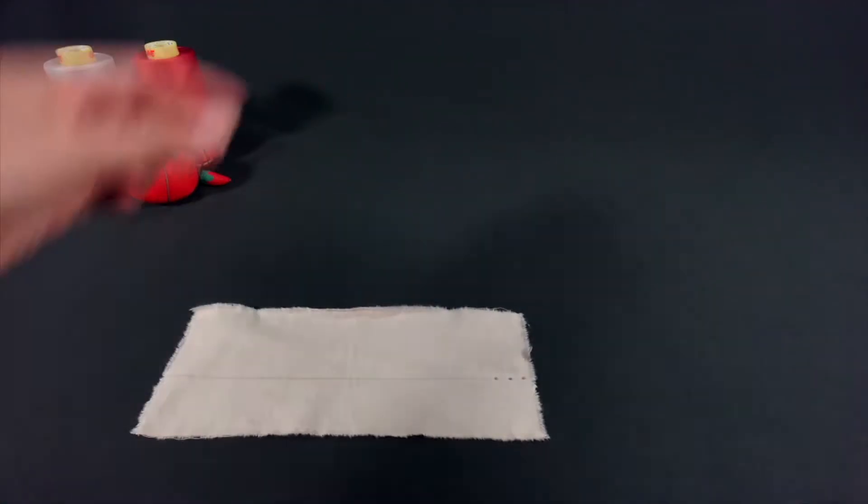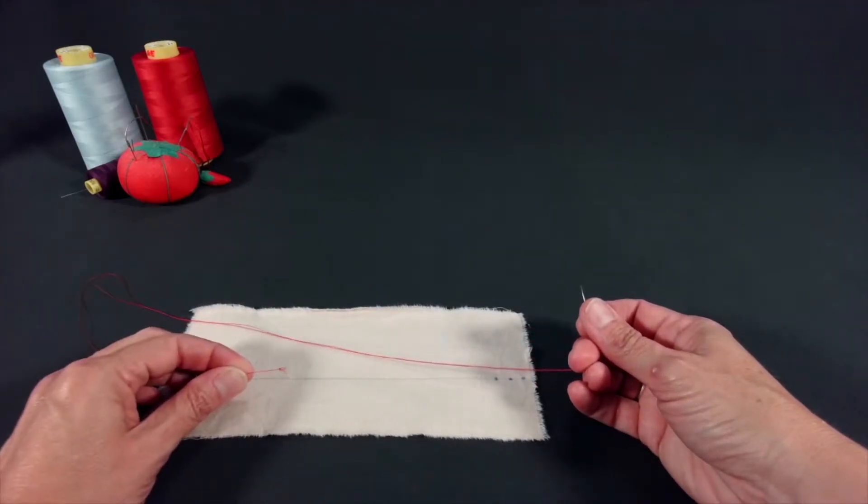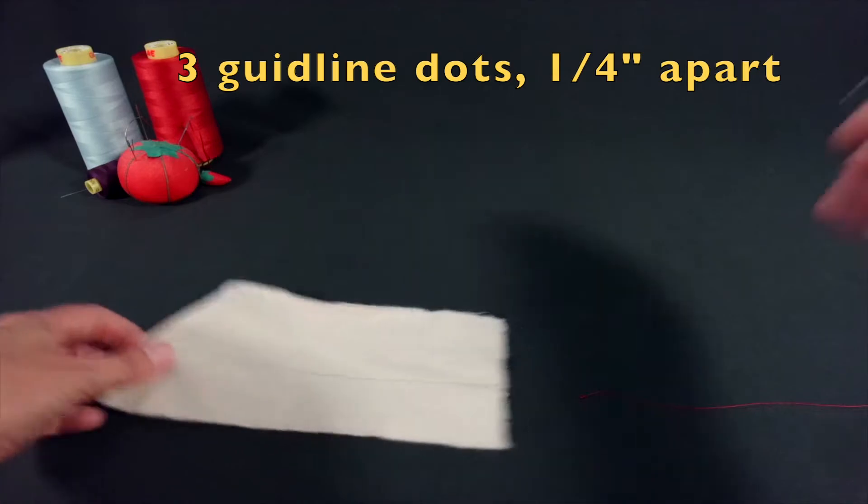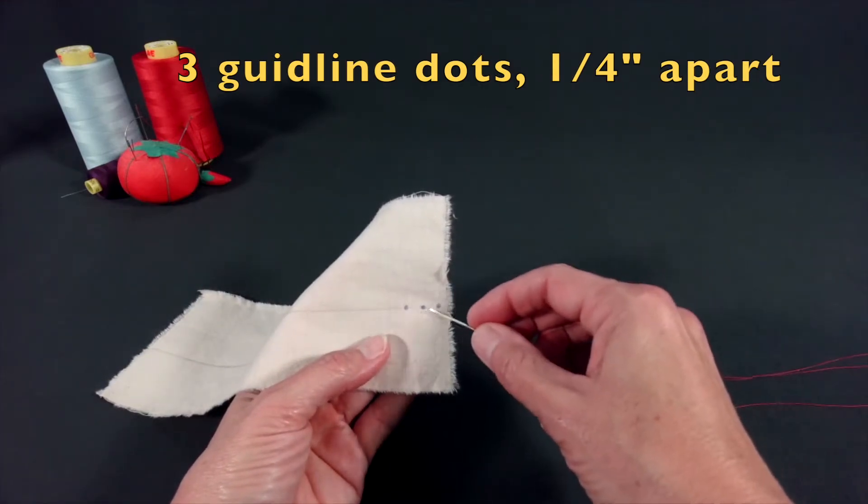Use a single strand of thread and knot the end. Start by making three guideline dots a quarter inch apart.